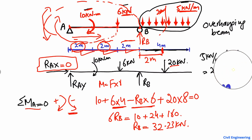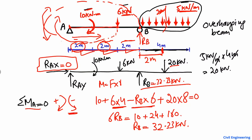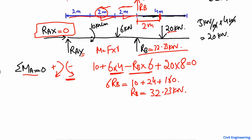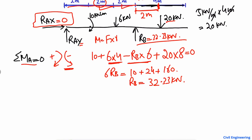Dividing by 6, RB comes out to be 32.33 kilonewton. So the vertical reaction at the roller support B is 32.33 kilonewton acting upward. Now to find RAy, we use the summation of vertical forces equal to zero.